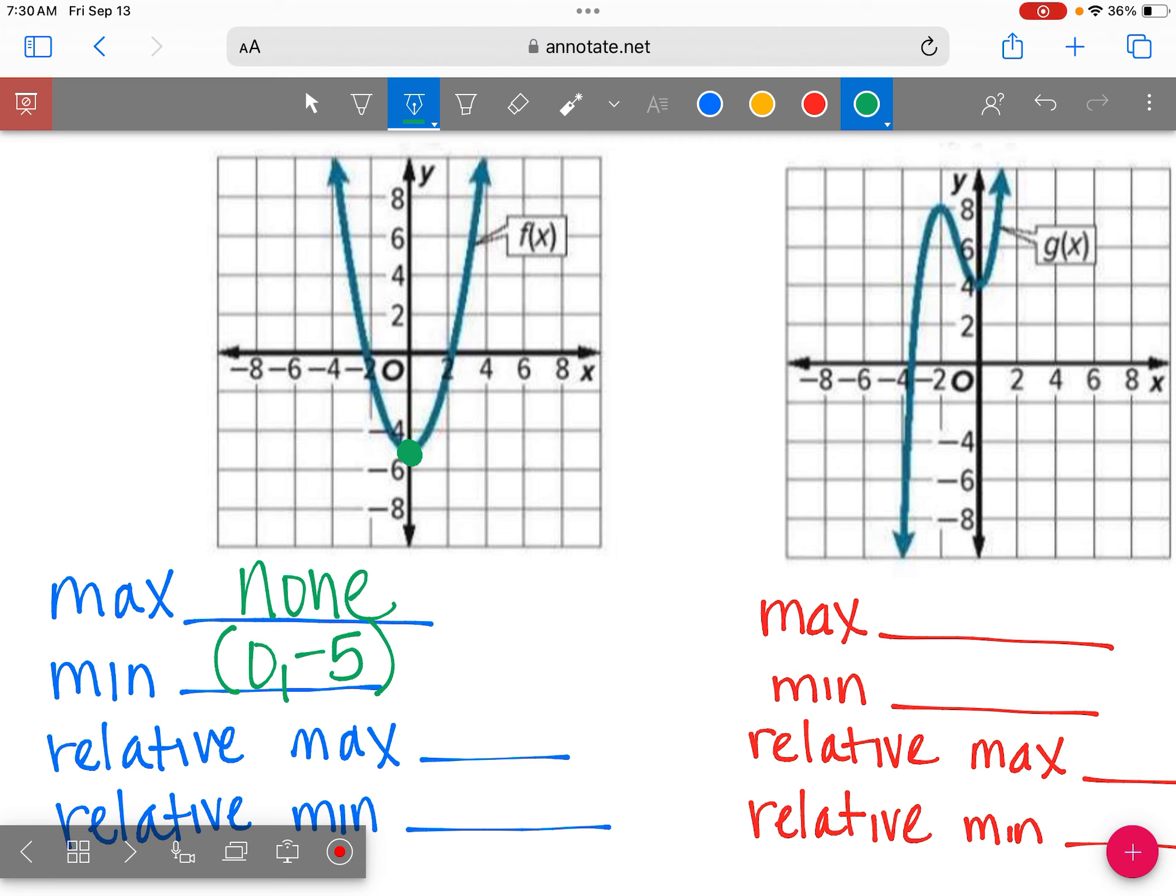Now this graph also doesn't have a relative max because we don't have a hilltop. And we'll look at a graph next that does. So we don't have a relative max either. And this point is also our relative min. Any point that's a regular min is also going to be a relative min. So it is possible for it to be both, both a relative and a max.